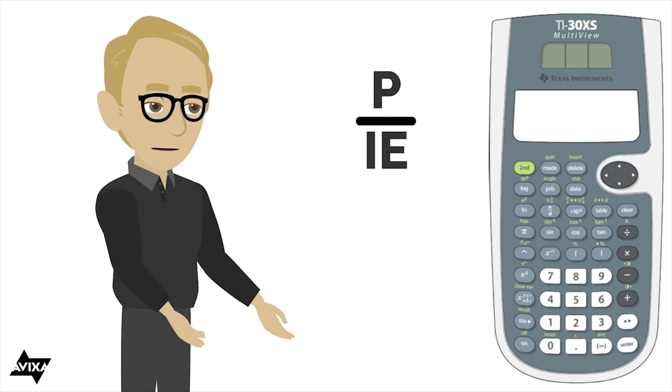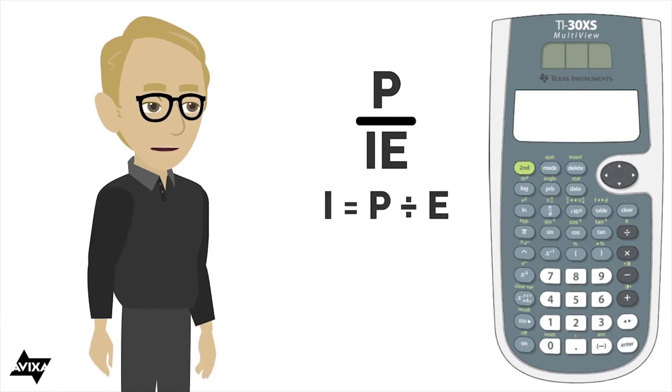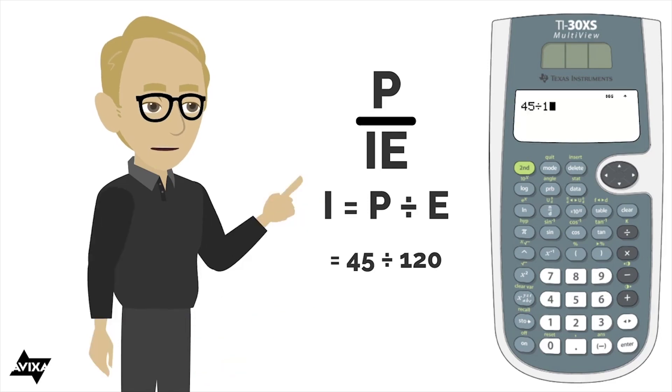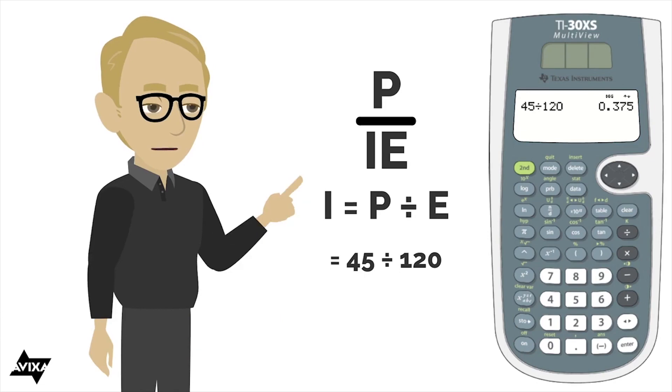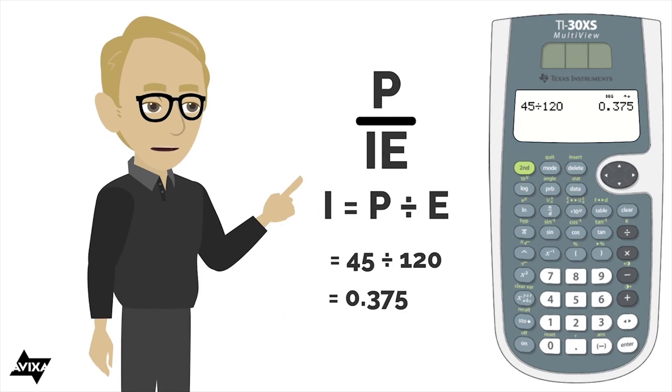Let's do another one. Let's do current. So that's going to be power divided by voltage. And let's say the power is 45 watts being consumed in the circuit. And again, we'll do 120 volts. So 45 divided by 120. And then hit the enter key down at the lower right. This tells me that we are drawing .375 amperes worth of current.